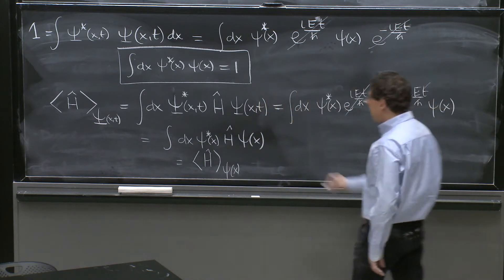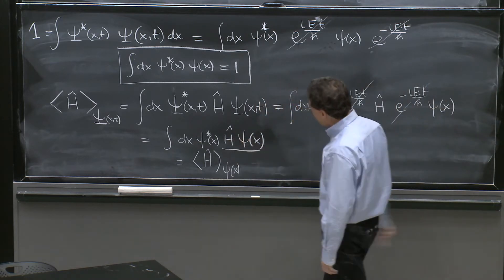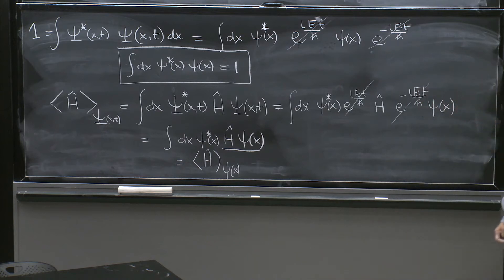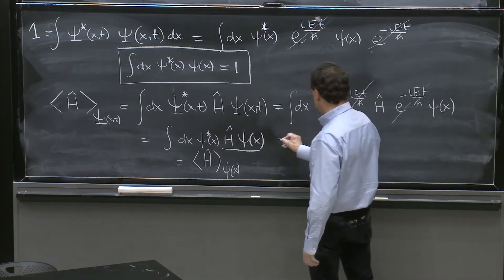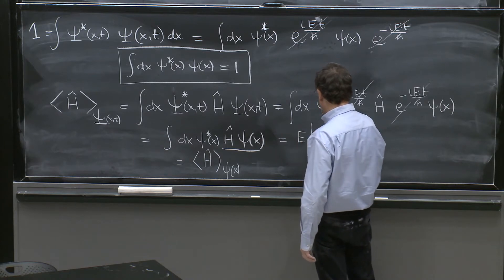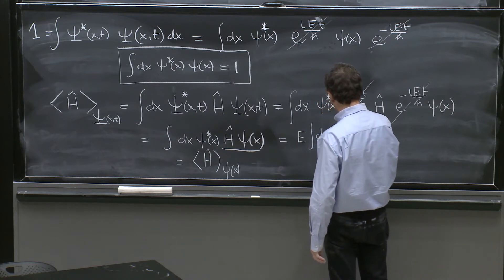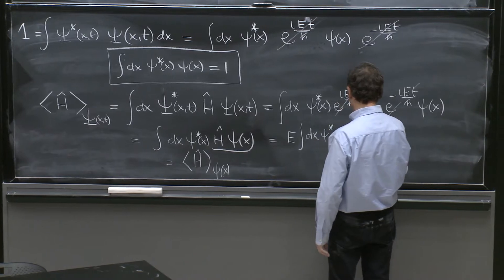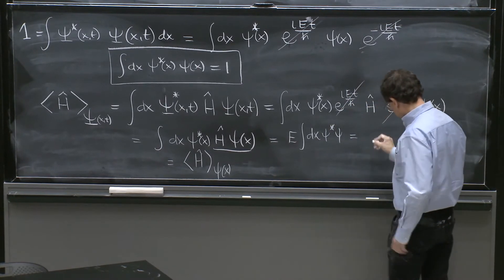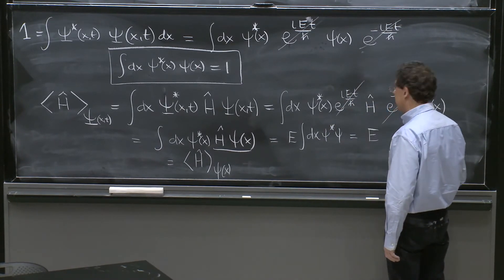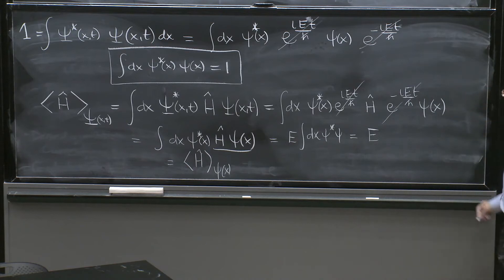But this one we can evaluate, because if we are in a stationary state, H hat on psi of x is E times psi of x. So we get an E integral dx psi star of psi, which we already showed that integral is equal to 1. So we get the energy.